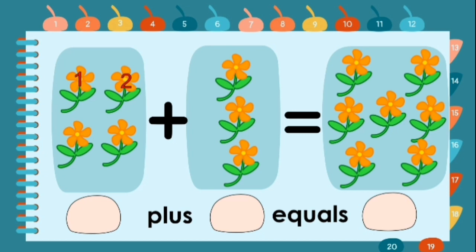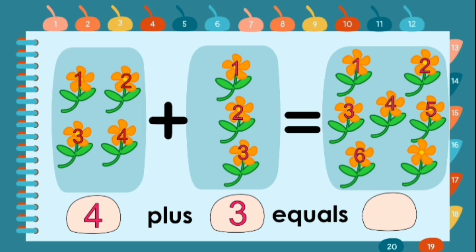One, two, three, four — four flowers. Plus one, two, three — three flowers. Equals. Let's count together: one, two, three, four, five, six, seven. Four plus three equals seven.